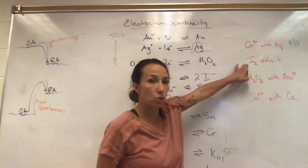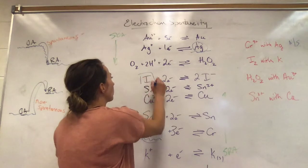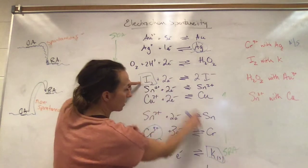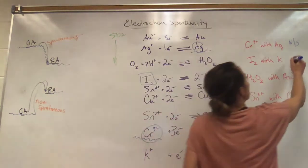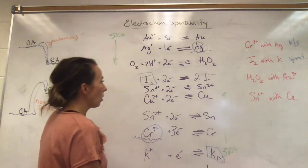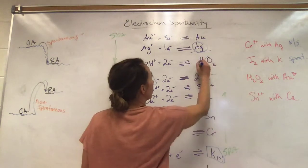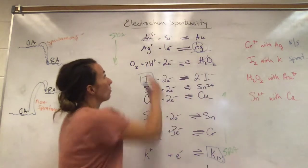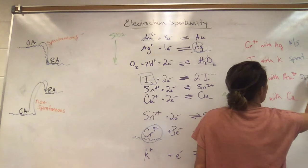What about I₂ with potassium? I find I₂ and I find the potassium — that is definitely a spontaneous waterfall, so this will be spontaneous. What about H₂O₂ with gold? Here's my H₂O₂ and here's my Au³⁺. That is a downward waterfall from here to here, so this is going to be spontaneous.